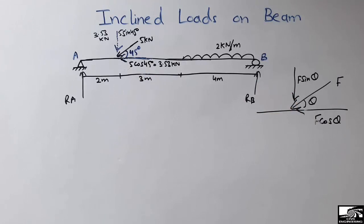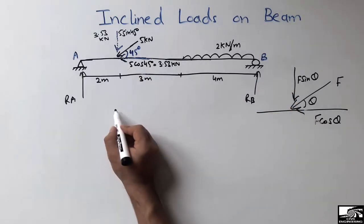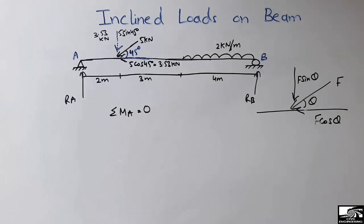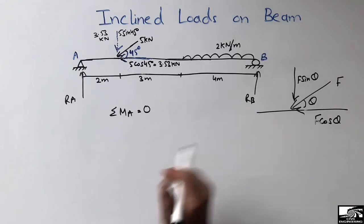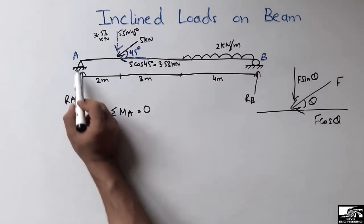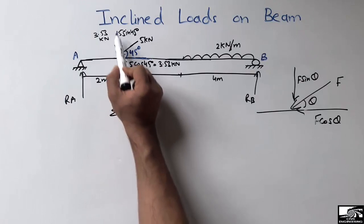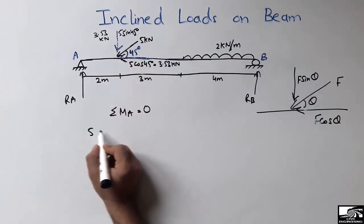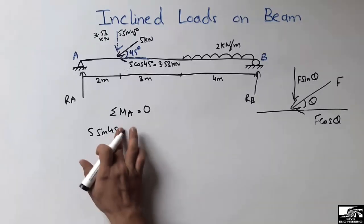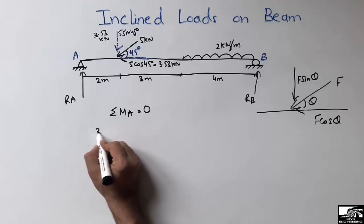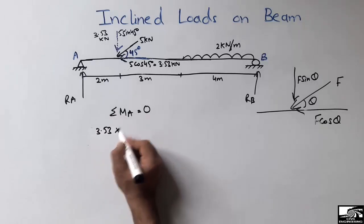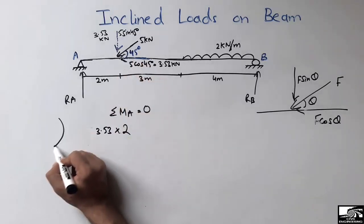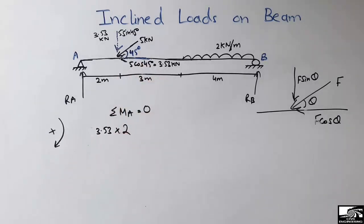Now my objective is to find RA vertical and RB. Taking the summation of moments at A equal to zero, I can find RB. The vertical component of the inclined load — 5 sin 45 degrees, which equals 3.53 kN — acts with a moment arm of 2 meters. I consider the clockwise direction as positive, so this moment is positive.